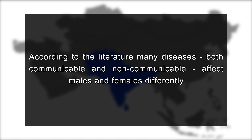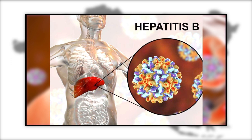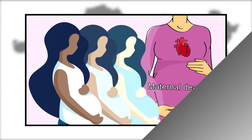Another factor may underlie this deficit. According to literature, many diseases, both communicable and non-communicable, affect males and females differently. If a disease widespread in these Asian populations, for example hepatitis B, were associated with higher rates of female mortality in utero or in early childhood, then there would be a proportion of missing women to be attributed to the prevalence of this infection.